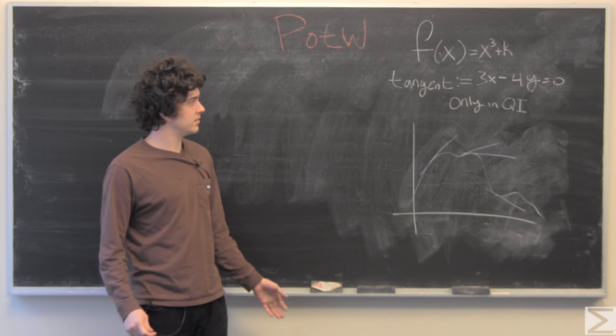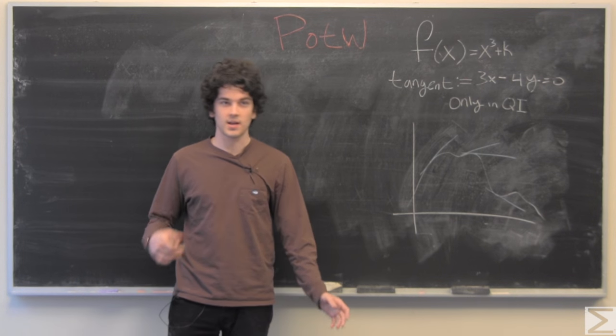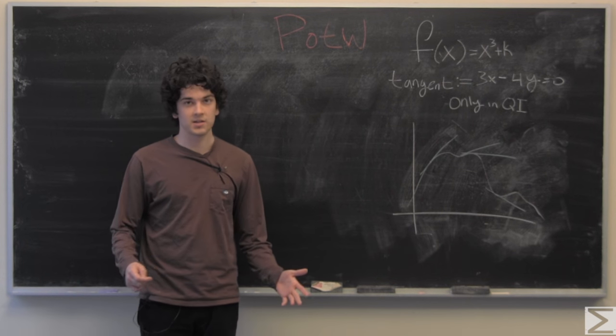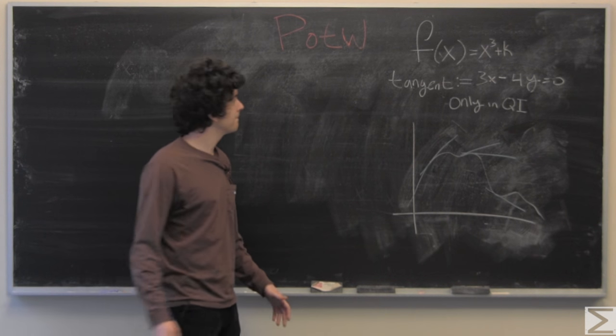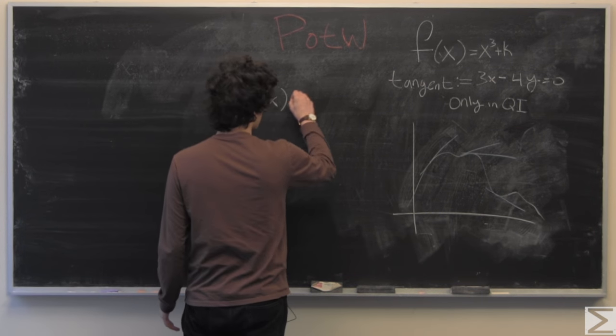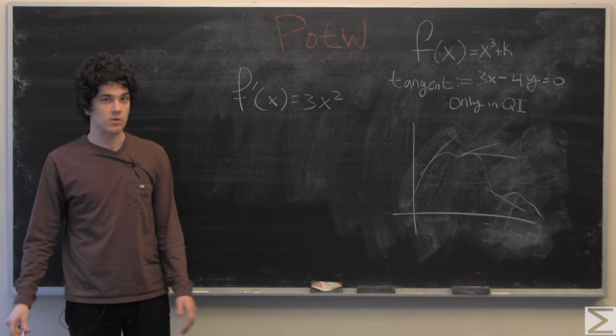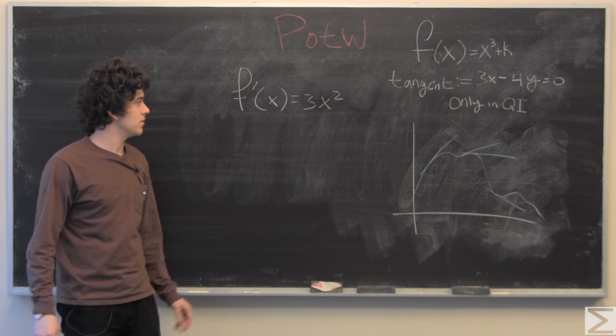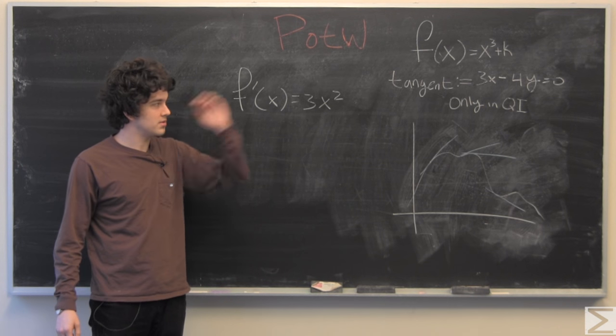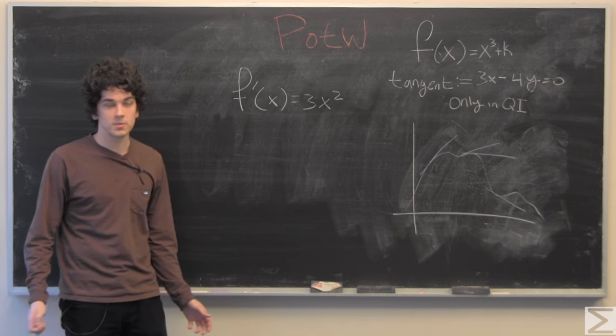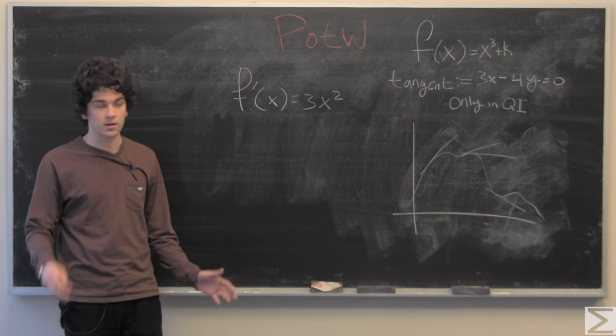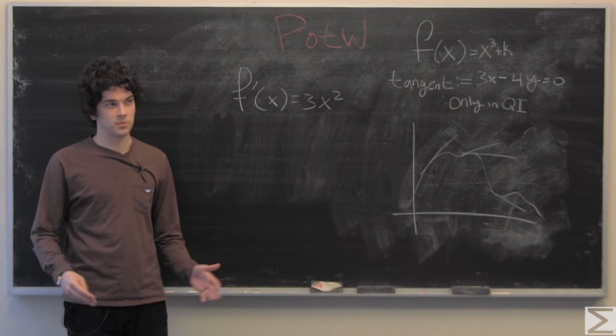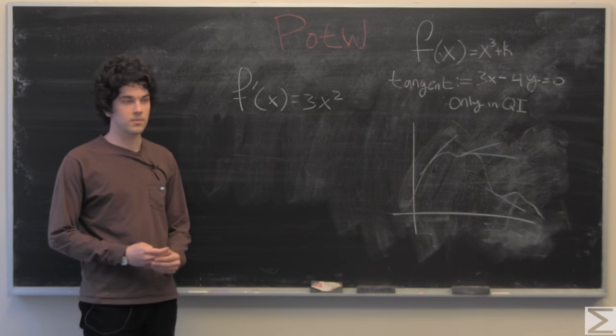We're going to find the derivative of the function, which is that instantaneous rate of change or instantaneous slope if you want to think of it that way. Using the power rule, we bring down that cube and subtract one and the constant is going to go away, which is nice because that's what we're solving for, so we don't want that in our problem when we're solving for it explicitly.